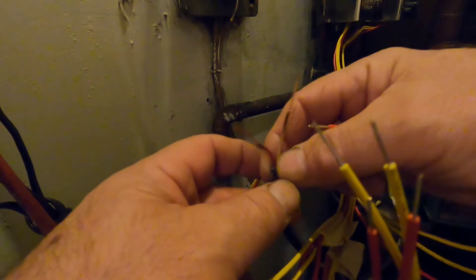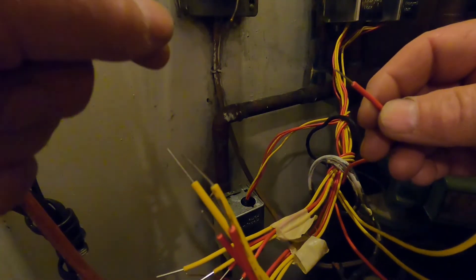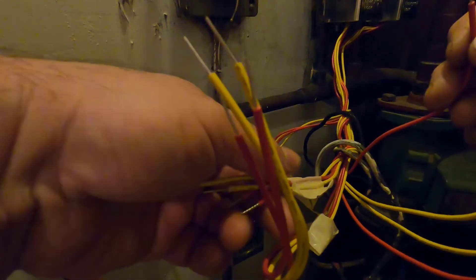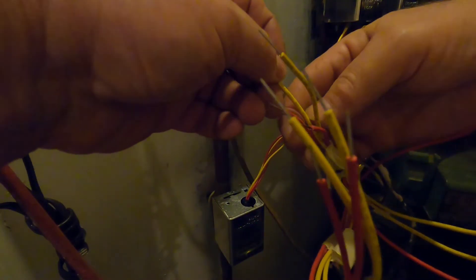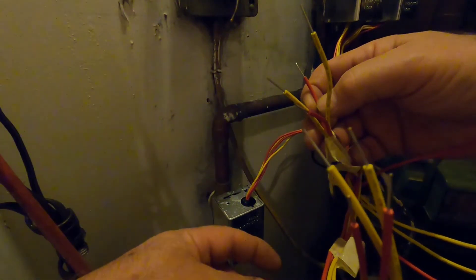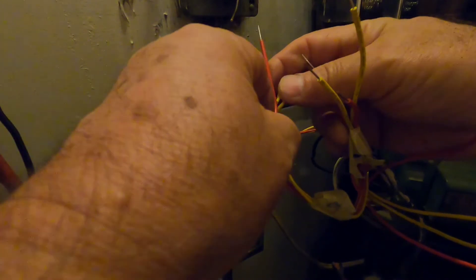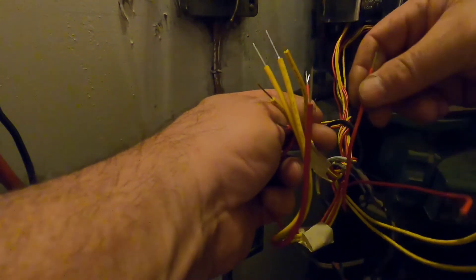These wires here for the aquostat, each one of the red wires coming from the zone valve has to be connected to it. So we'll take one from this bundle, one from this bundle, and one from this bundle here.